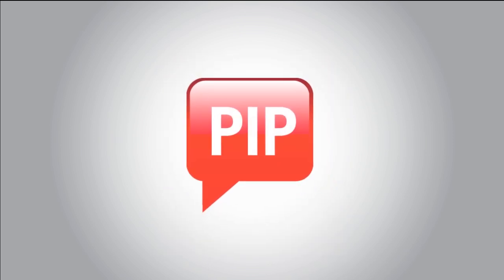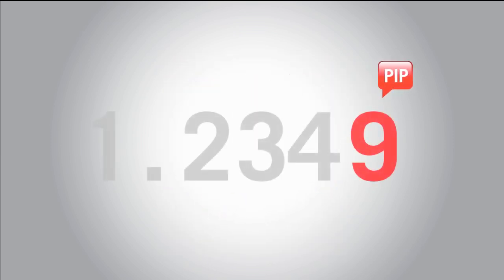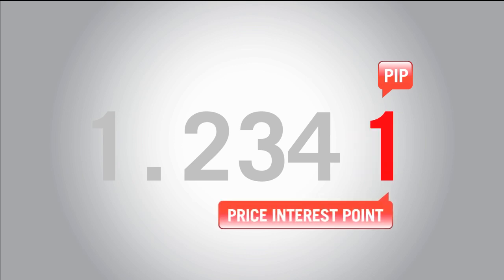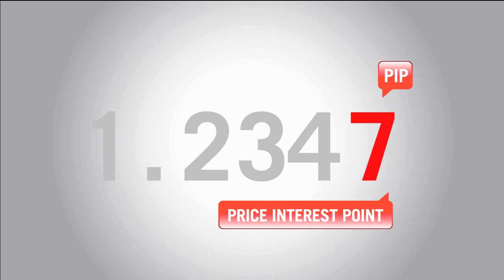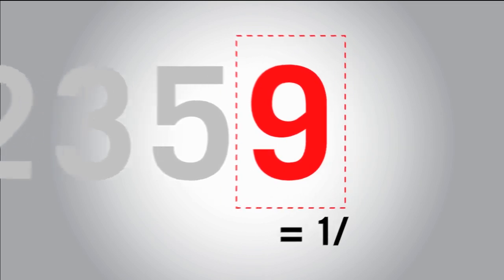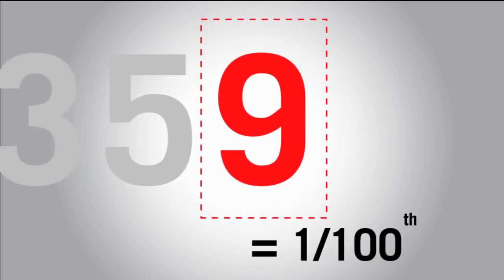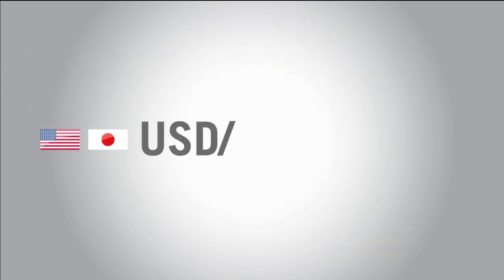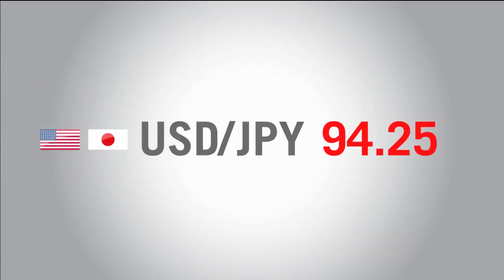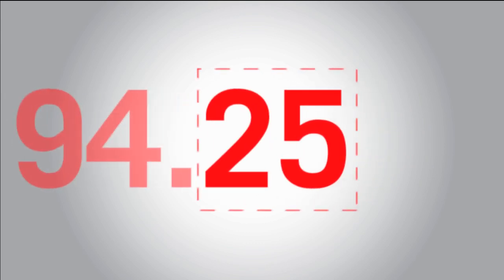Pips are the reason why people begin trading Forex. The overall goal with trading is to make pips and increase your account profit. A pip stands for price interest point and is the smallest price change a given pair or exchange rate can make. Most pairs are measured to 4 decimal points, or 1 one-hundredth of 1%. In the case of Japanese yen pairs, these are measured to only 2 decimal places.